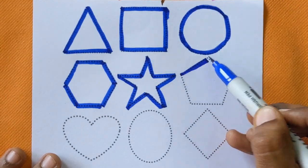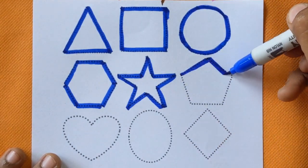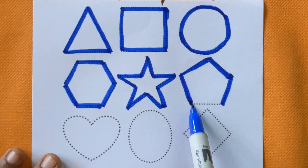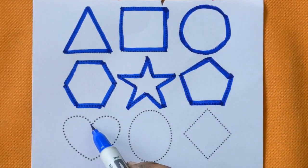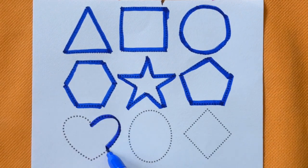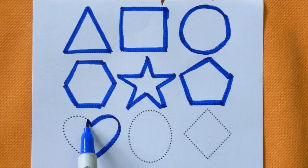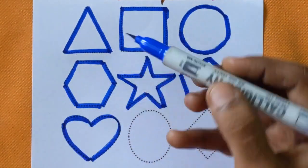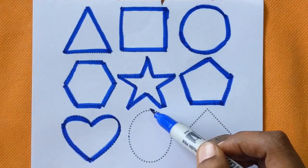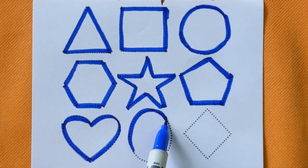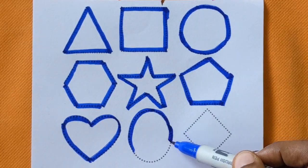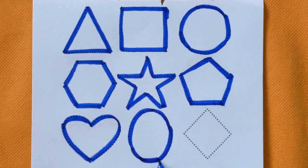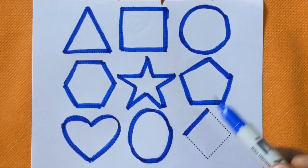Pentagon. Heart shape. This is oval. And rhombus.